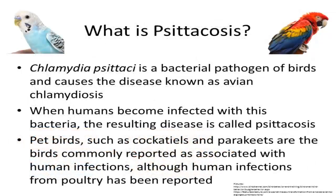Chlamydia psittaci is a bacterial pathogen that is capable of infecting birds and people. In birds, infection with this bacteria is referred to as avian chlamydiosis. When humans are infected with the bacteria, the resulting disease is called psittacosis. Although some literature will use the term psittacosis to describe infection in both birds and humans, for the purpose of this module we will refer to infection in birds as avian chlamydiosis and infection in humans as psittacosis.